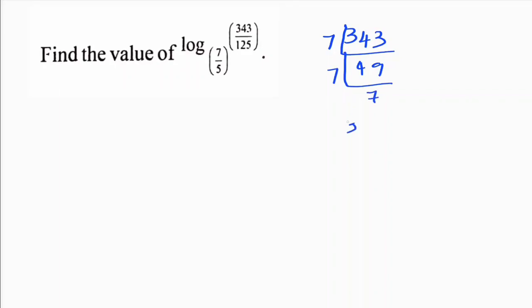So 343 you can write as 7 cube, and in the same way 125 you can write as 5 times 25 and 5 times 5. So 125 you can write as 5 cube.